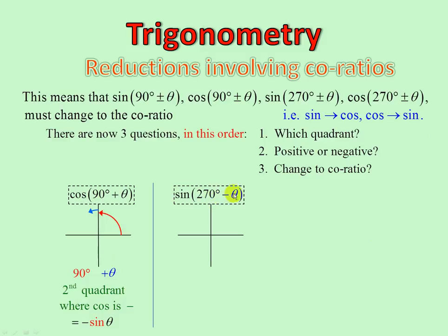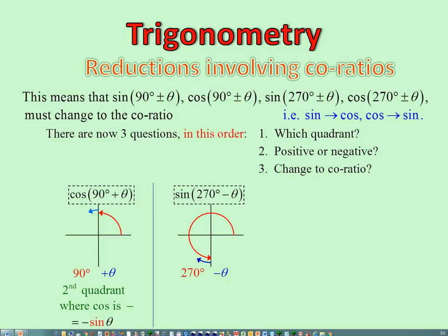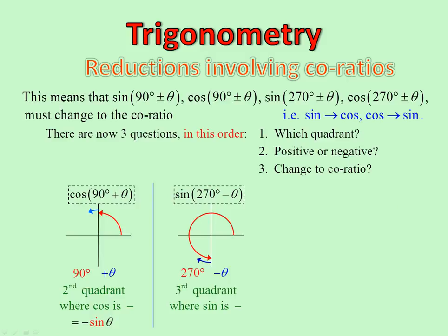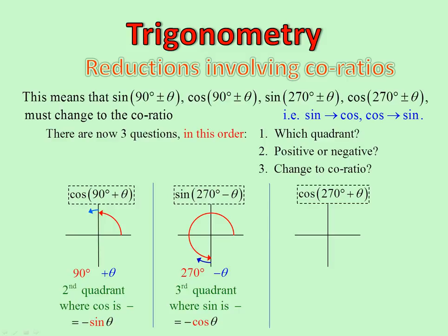Sine of 270 minus theta: at 270 nudge back — third quadrant. Sine is negative. Because it's attached to 270, it does go to its co-ratio. Therefore negative cos theta. Cos of 270 plus theta: go 270 plus theta — fourth quadrant, where cos is positive. Does it change to co-ratio? Yes, because it's attached to 270. Positive sin theta.